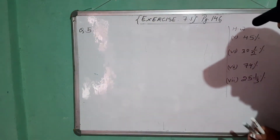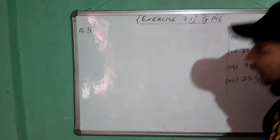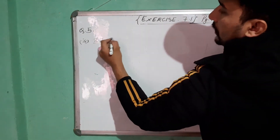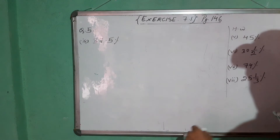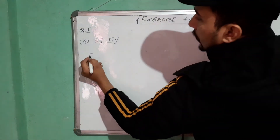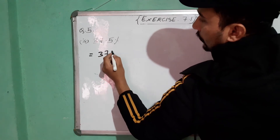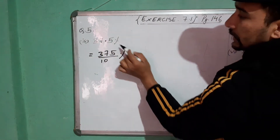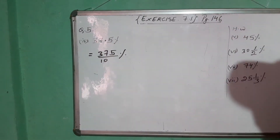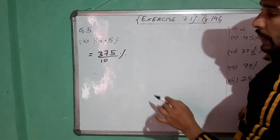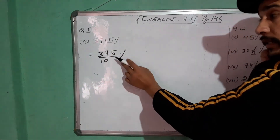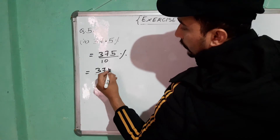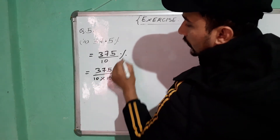Next question, number 4: 37.5%. To remove the decimal point — the digit is in the tens place — put 10 in the denominator: 375/10%. Now divide by 100 to remove the percentage: 375 divided by 10 into 100, which gives 375/1000.